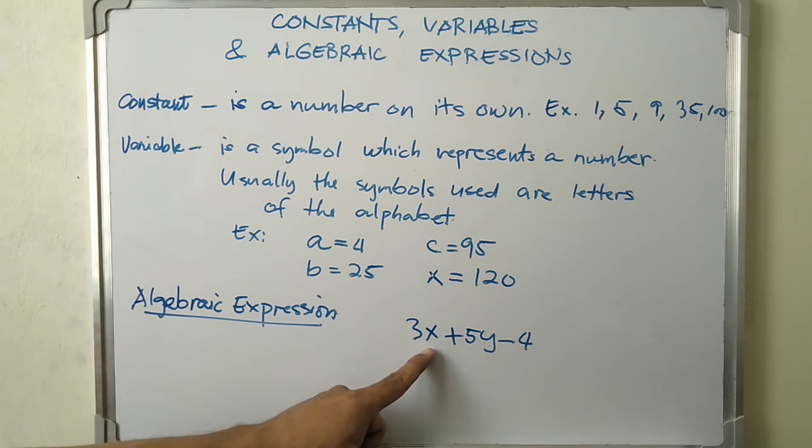We have 3x. 3 is a constant combined with a variable x. We have 5y and we have only a constant here.